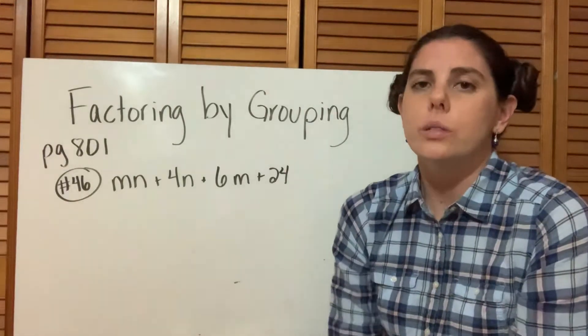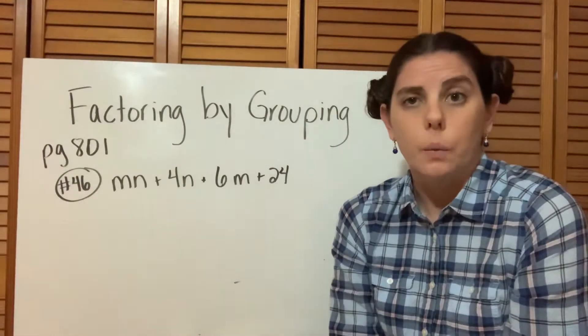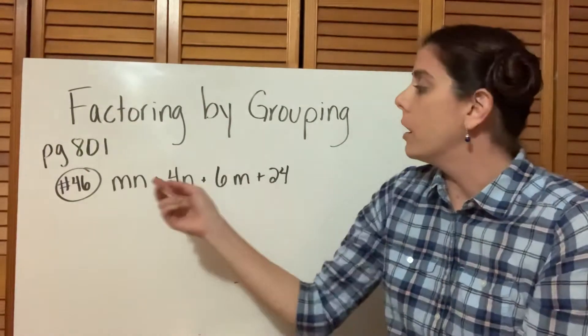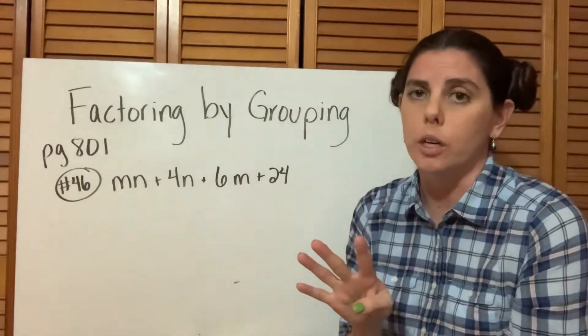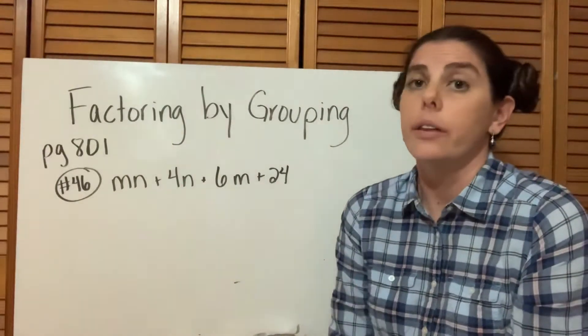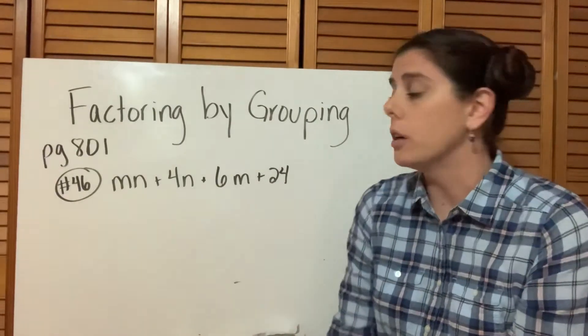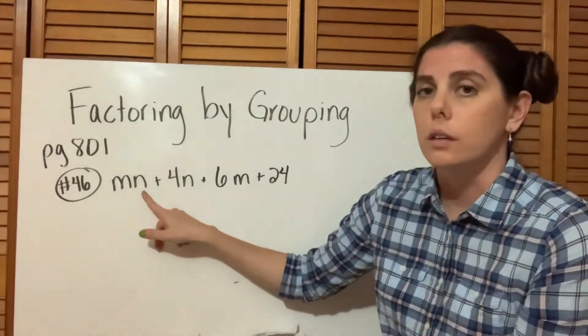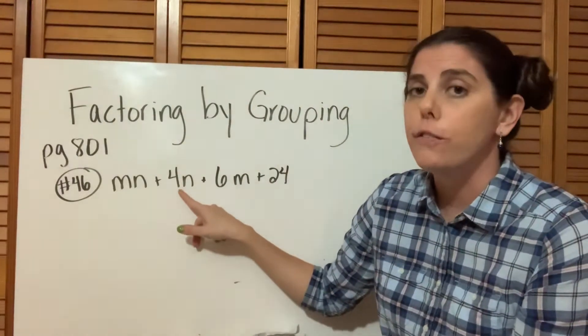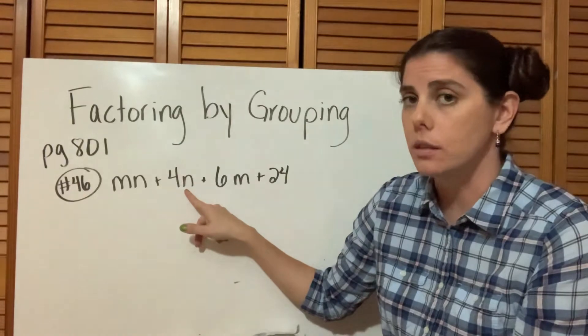Most of the problems you're going to work with have three terms. But what if we have an expression that has four terms? If you look at each of these terms, there is no GCF. We have MN in this term, an M and an N, but in this term we have a 4 and an N, so there's no M in this term.